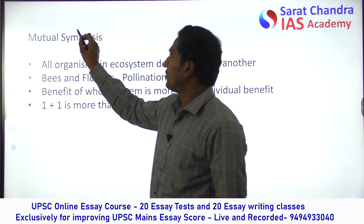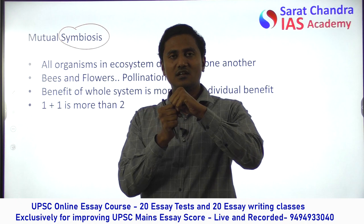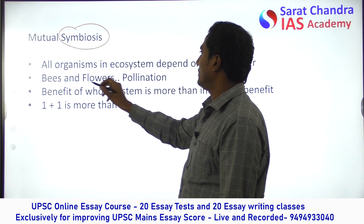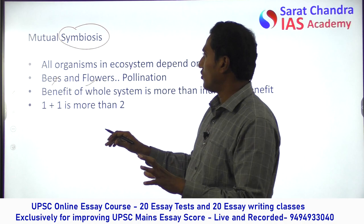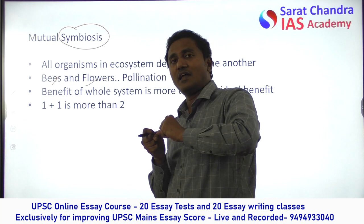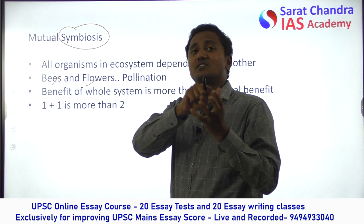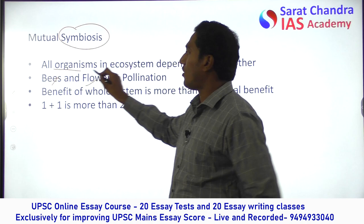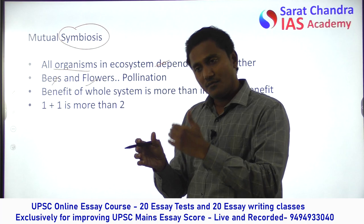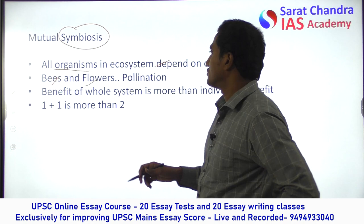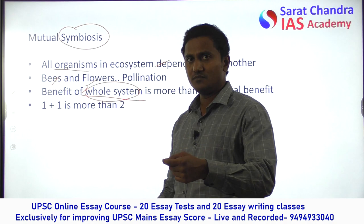Another quality is symbiosis — two organisms depending on and helping each other, thriving because of their coordination and cooperation. For example, bees depend on the nectar of flowers, and flowers depend on bees for pollination. In the economy, we have to learn symbiosis. For example, the waste coming out of one manufacturing unit should be used for another unit. Ancillary industries should help major industries. In an ecosystem, all organisms depend on one another through food chains, nutrient cycling, and energy pyramids — and the whole system benefits. When two organisms coordinate, one plus one becomes three or four.